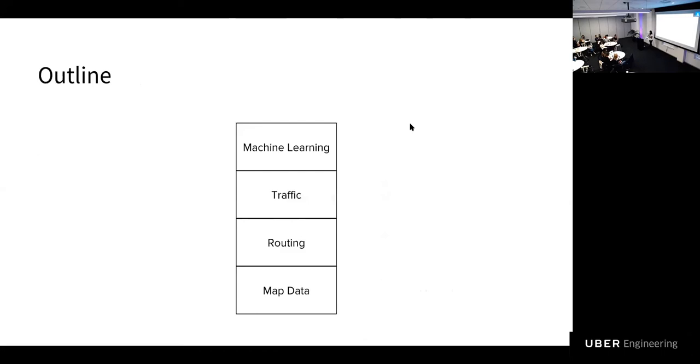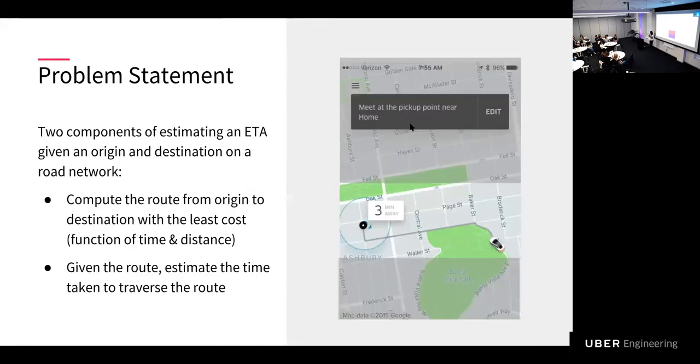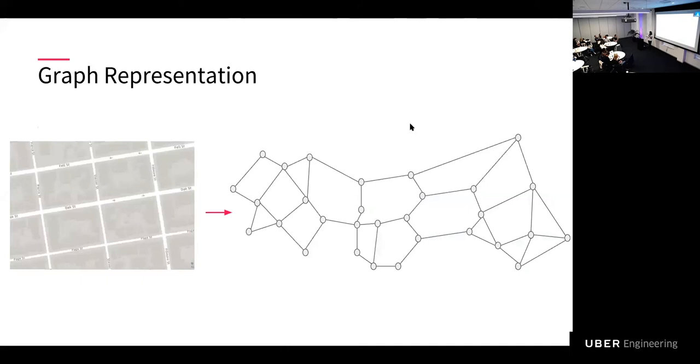In the rest of the talk, I'm going to spend time talking about these systems that we have in place to really predict good ETAs at Uber. I'll start with routing. I'll speak about routing algorithms and especially serving the large-scale, low-latency serving purposes at Uber. What's the problem statement in routing? We need to find the best possible route and an ETA given an origin and given a destination on a road network. And that has two components. The first component is to find the best possible route or the shortest route, which is a function of the time and distance of the route. And the second is given you have a route, how do you find the best possible ETA, the most accurate ETA?